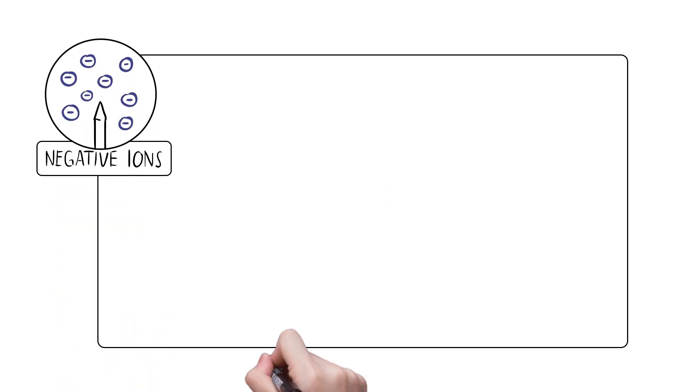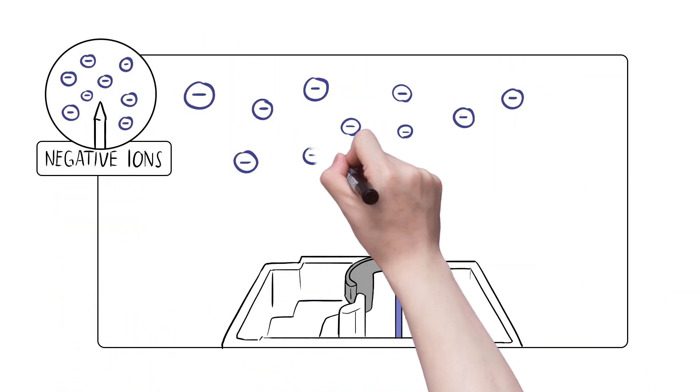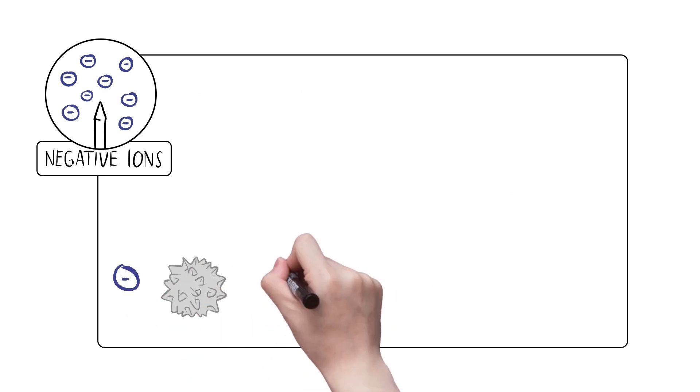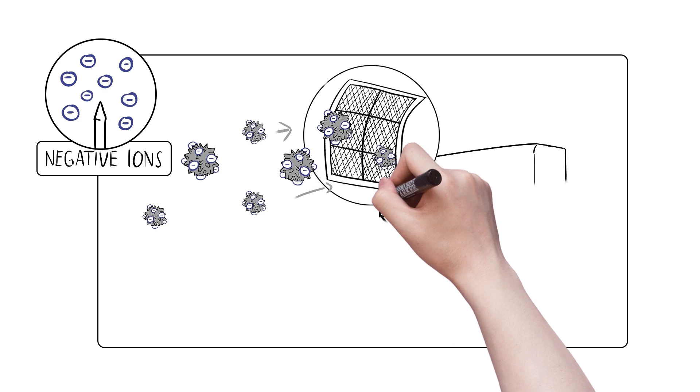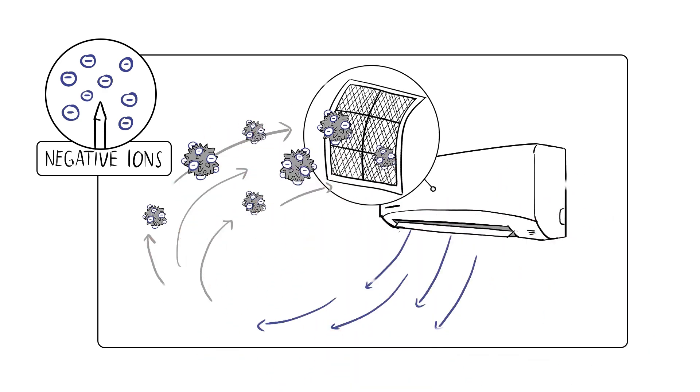2. Negative ions. The ion generator releases negative ions. Negative ions attach to dust particles. These particles are carried back and trapped at the filter, circulating purified air.